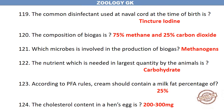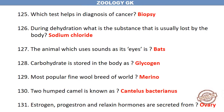The composition of biogas is 75% methane and 25% carbon dioxide. Which microbe is involved in the production of biogas? Methanogens. The nutrient needed in the largest quantity by animals is carbohydrate. According to PFA rules, cream should contain a milk fat percentage of 25%. The cholesterol content in a hen's egg is 200–300 mg.